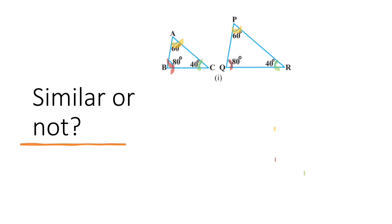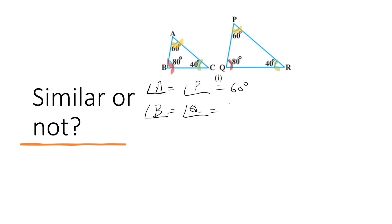So now we can say that the triangles are similar by AAA criteria. Let us first write the angles which are equal: angle A is equal to angle P, which is equal to 60 degrees; angle B is equal to angle Q, which is equal to 80 degrees; angle C is equal to angle R, which is equal to 40 degrees. So the triangles are similar by AAA criteria.